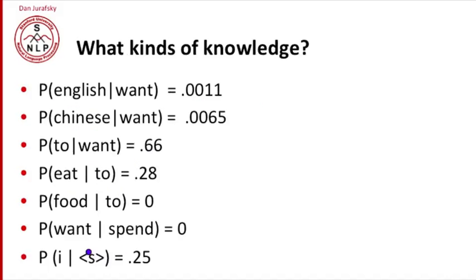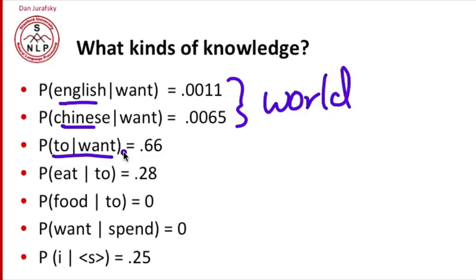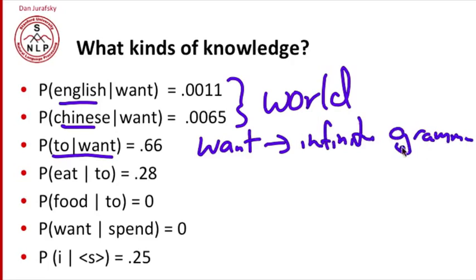What kinds of knowledge are expressed by these bigram probabilities? Why, for example, is the probability of English given want lower than the probability of Chinese given want? Probably that's because Chinese food is more popular, and more people are going to ask about it, so wanting Chinese is more likely than wanting English. So that's a fact about the world. What about the probability of to given want being so high? That's a fact about grammar. The verb want in English requires an infinitive after it. So that's grammar.